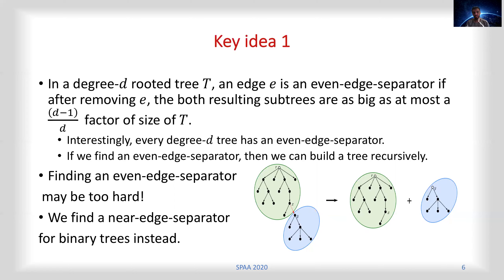For binary trees, a near-edge separator is very good for our purposes. It results in just a constant factor of the size of the original T, but not necessarily (d-1)/d.